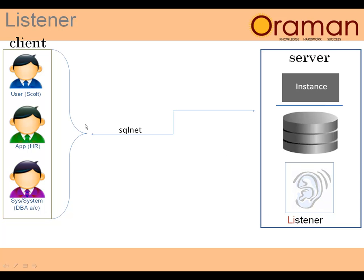On the client side, we also need to have some setup called TNS names. I will be showing you that, which will tell how to connect to the server and will give directions on the SQL net layer to connect the client to server. Once the connection is established and the user password is verified, clients can run queries — select, update, insert, delete — through this channel and get the results from the server to the client.